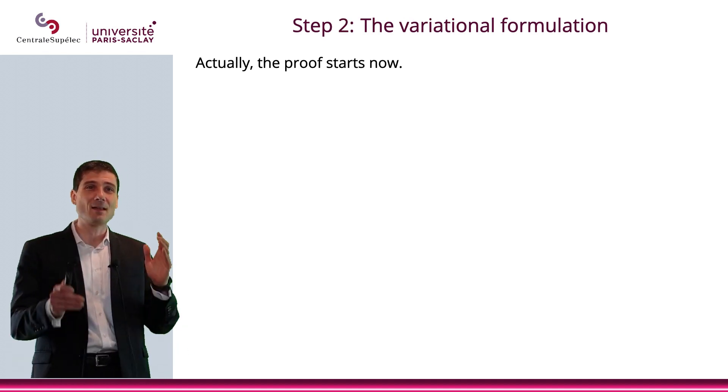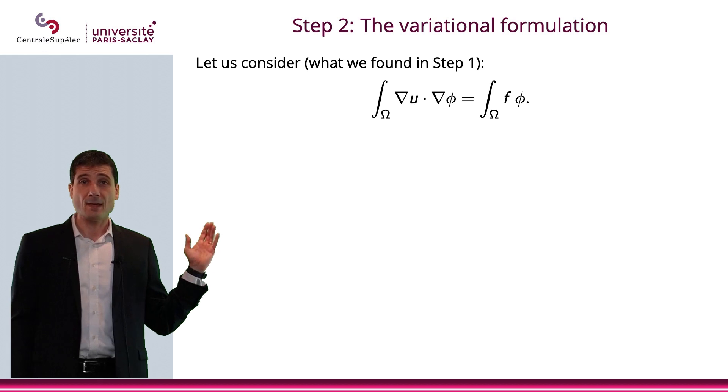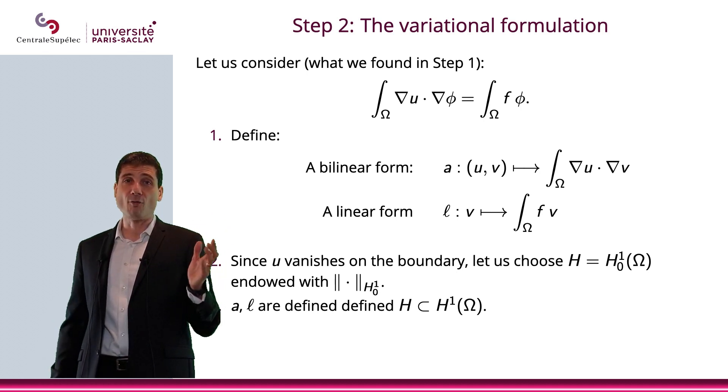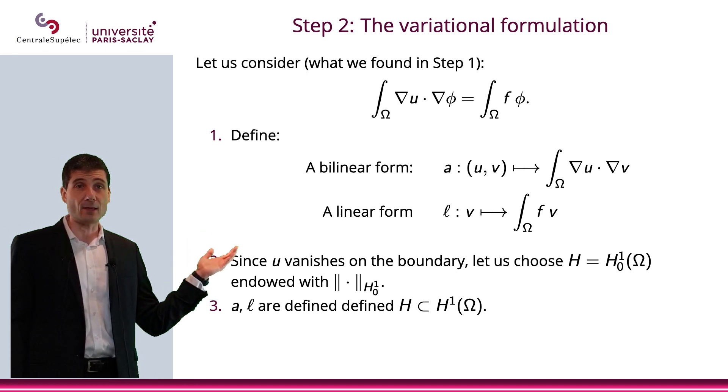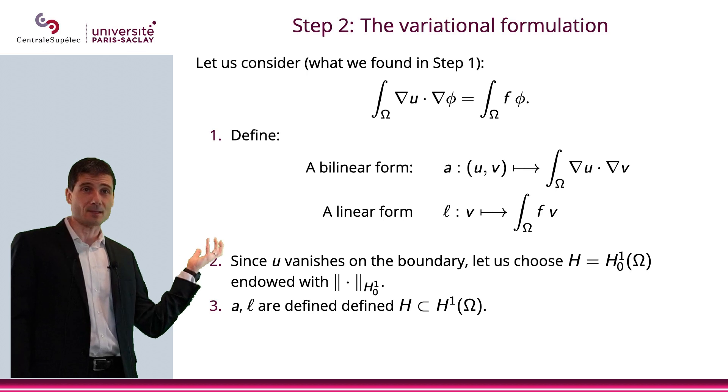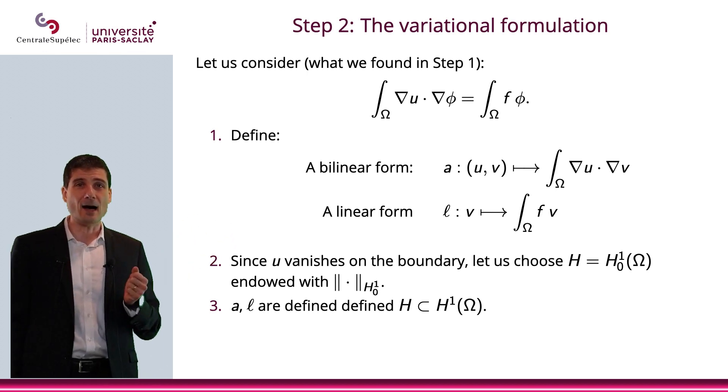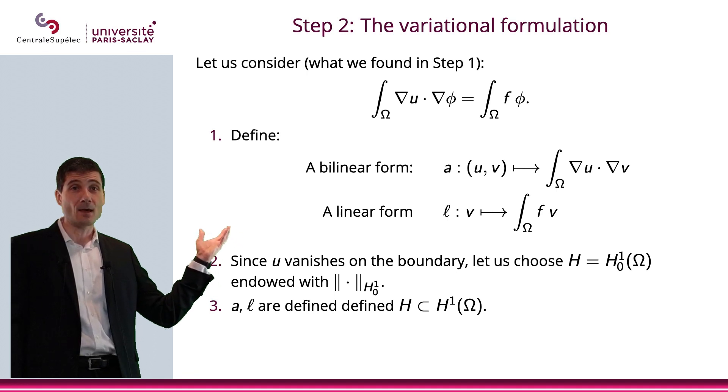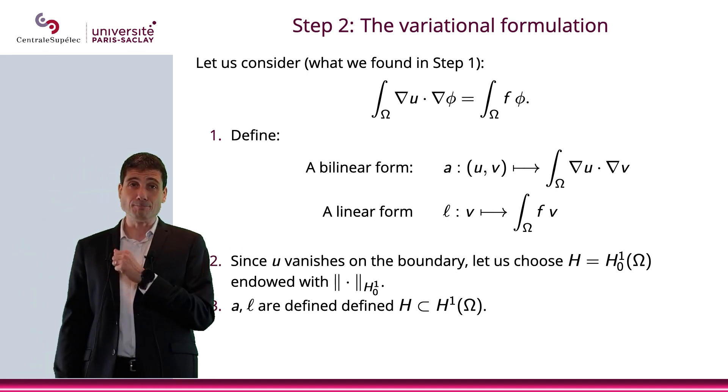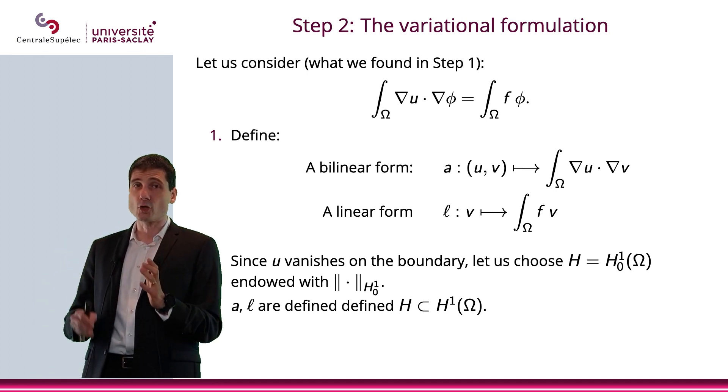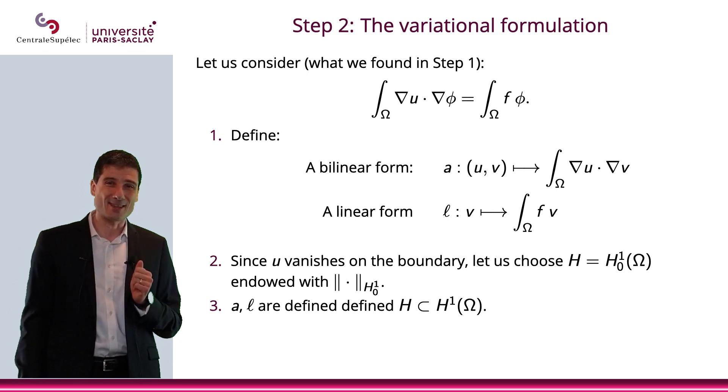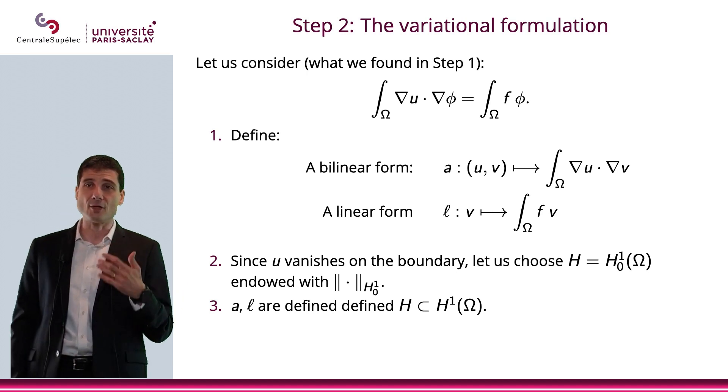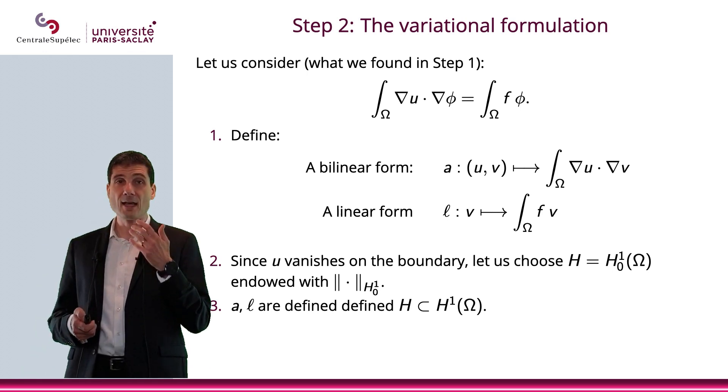Let us consider this equality. Based on this equality, as we did in the previous video, we will define a bilinear form A, which is the integral of del u del v, which corresponds to del u del phi. L is going to be such that l of v is the integral of f v over omega. U vanishes on the boundary, so we're going to choose H^1_0. We saw it was a pretty good choice in the previous videos. A and l are going to be defined on H^1_0. You can just verify we don't have any definition problem when working in H^1_0.